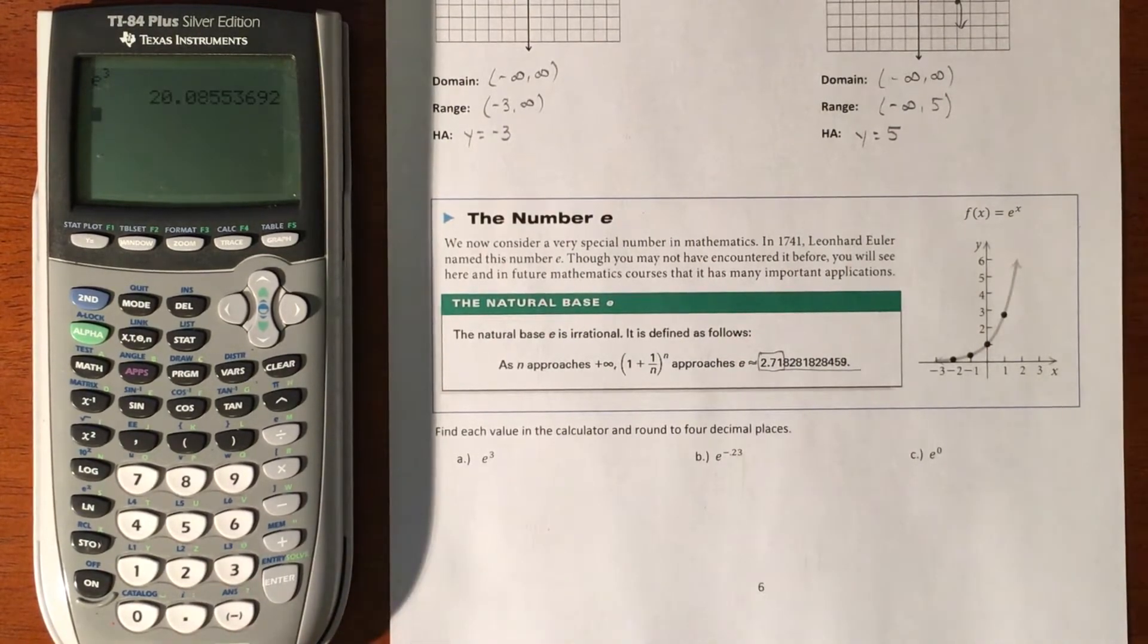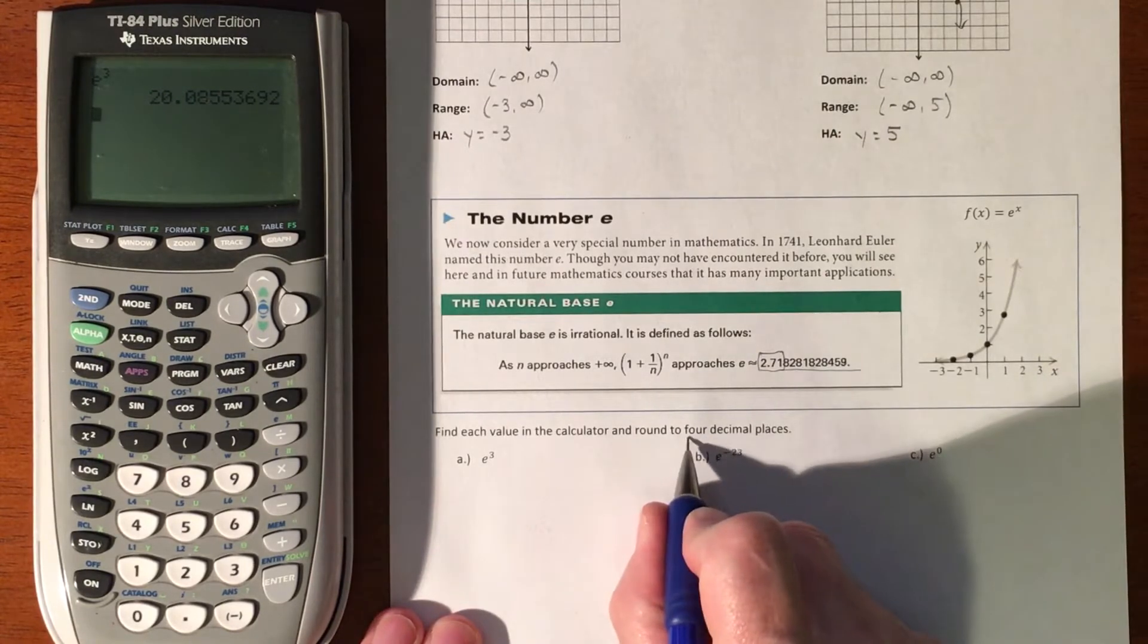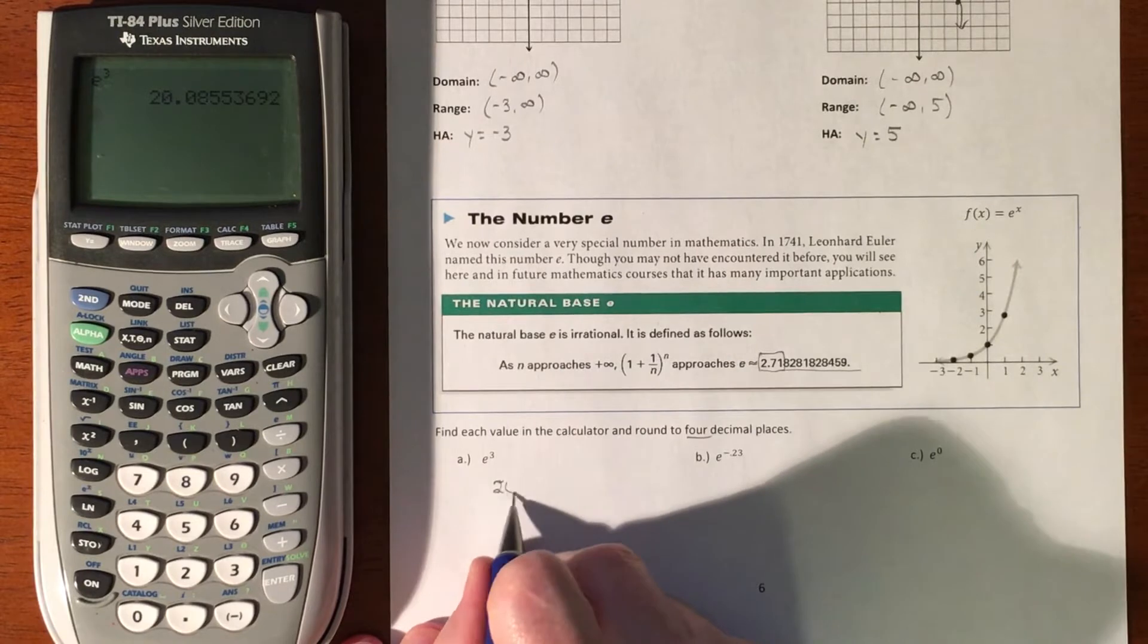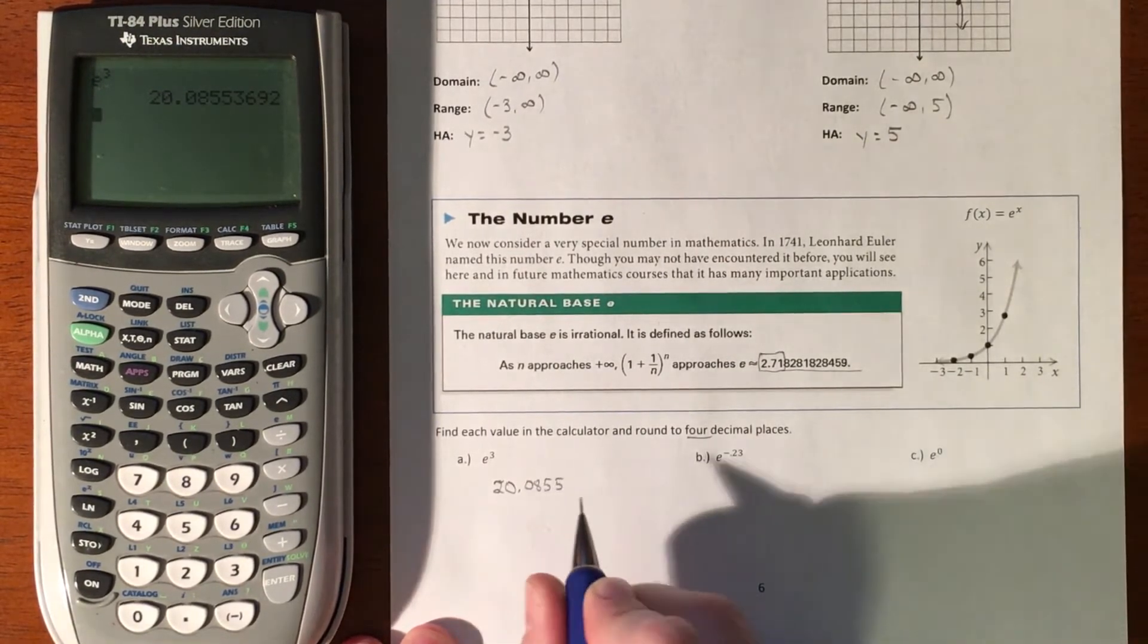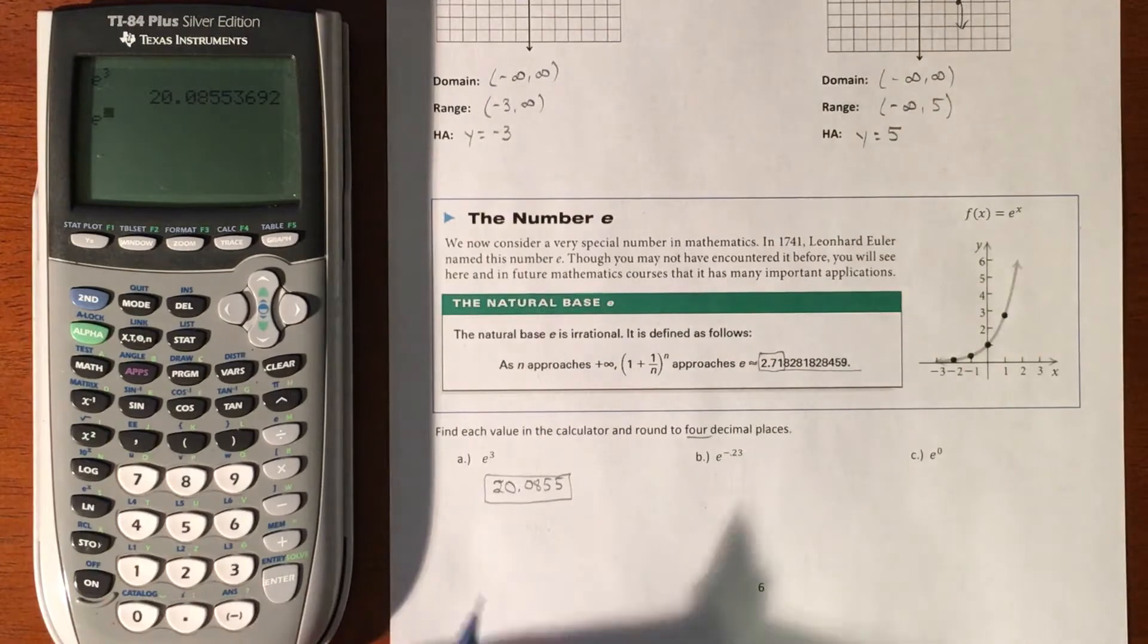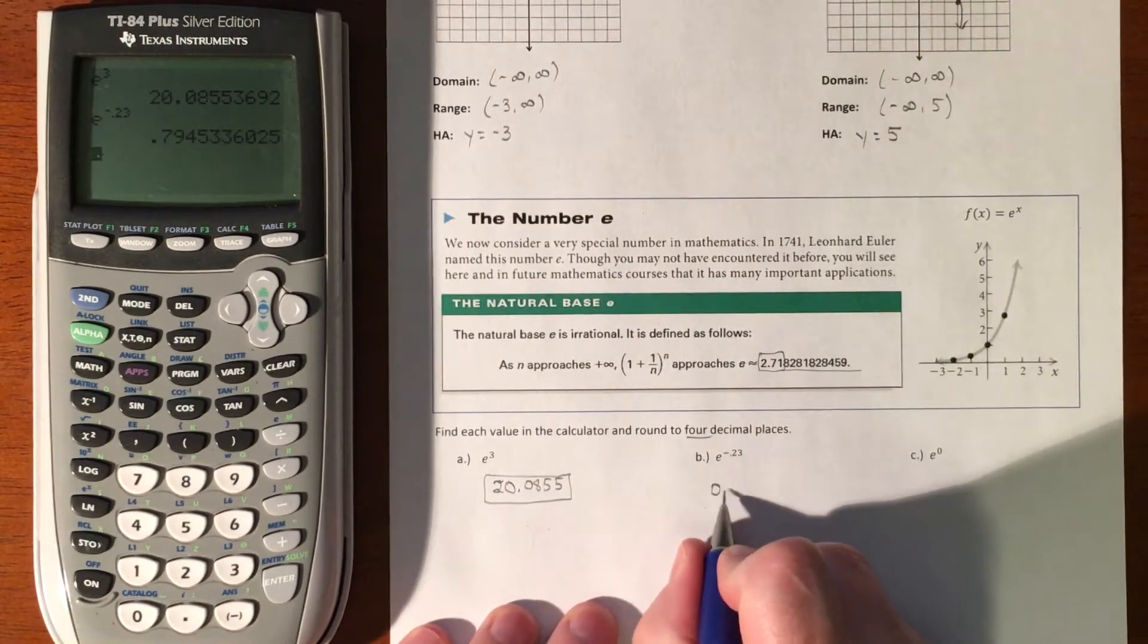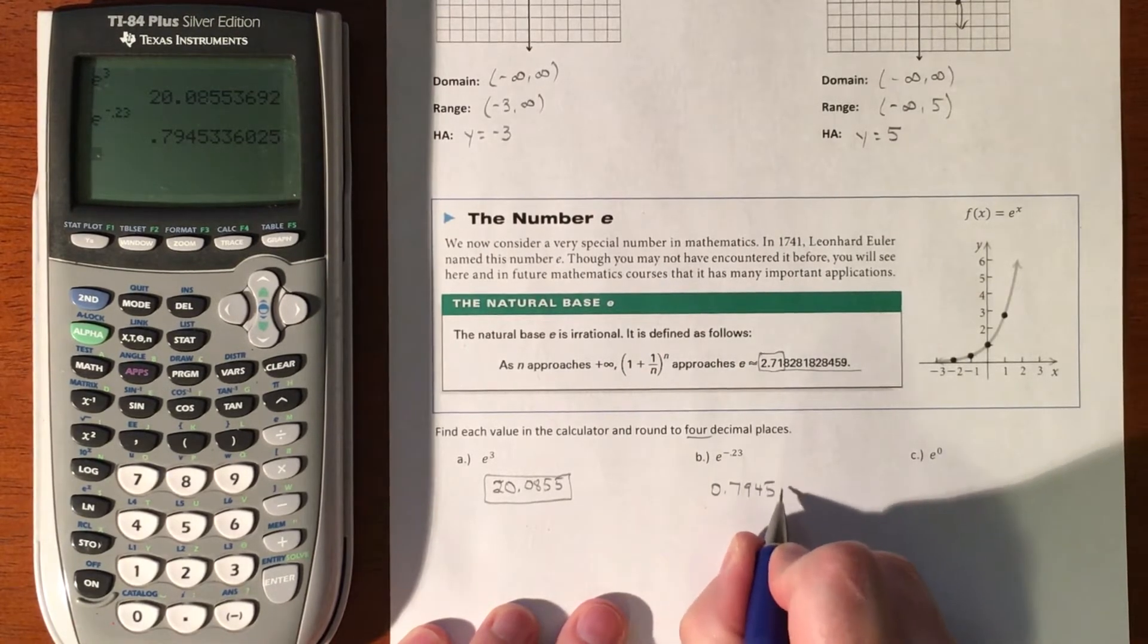And so I just get a value out of it. So that is, and we're going to go to four decimal places. So that is 20.0855. And then here, you're just going to go second E to the negative 0.23, and that's going to get us a 0.7945.